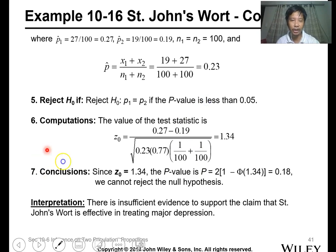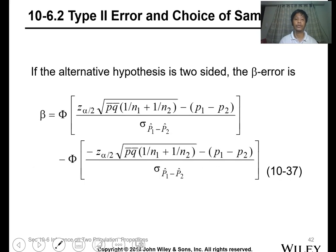Calculating the z-test and p-value, this is a two-tailed test. We get 1.34. The probability between 1 minus 1.34 is 0.18. Therefore, this value is greater than 0.05, so we cannot reject the null hypothesis. The interpretation is there is insufficient evidence to support the claim that St. John's Wort is effective in treating major depression.